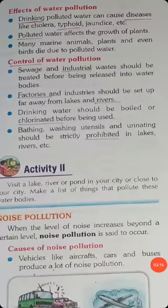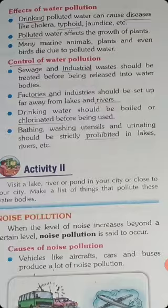Control of water pollution — what are the points? Sewage and industrial waste should be treated before being released into water bodies. Factories and industries should be set up far away from lakes and rivers. This is one of the very good suggestions — as we can say, we can control water pollution with the help of this point.